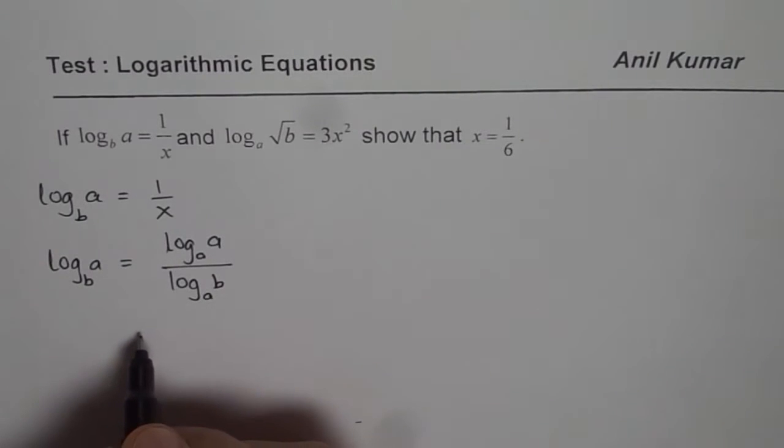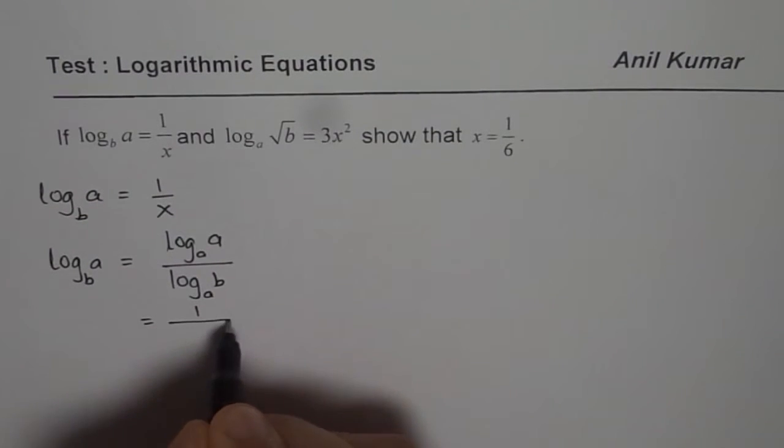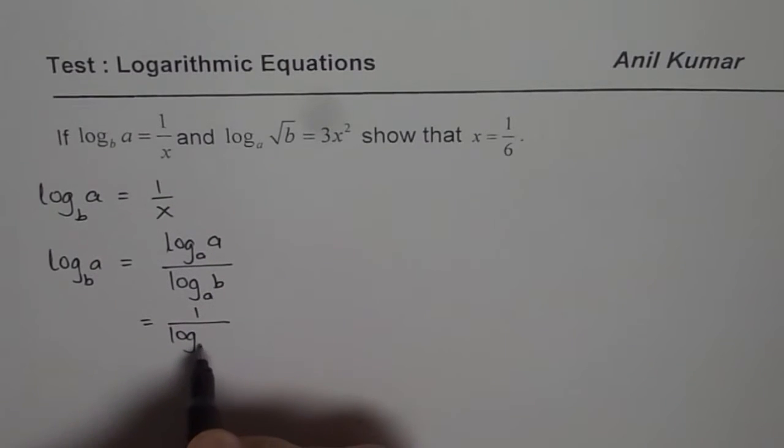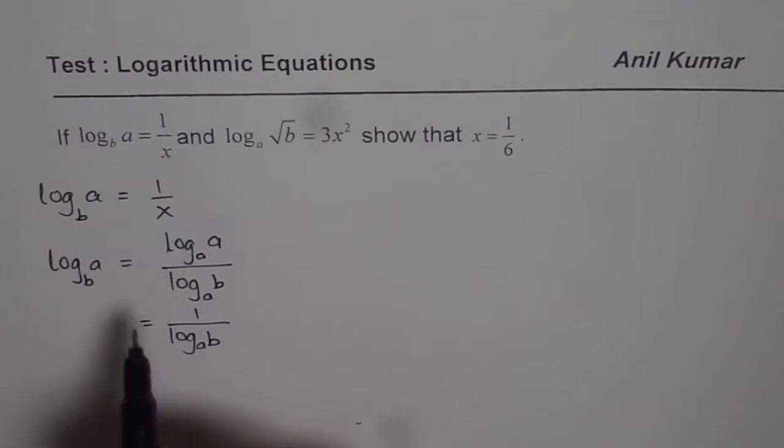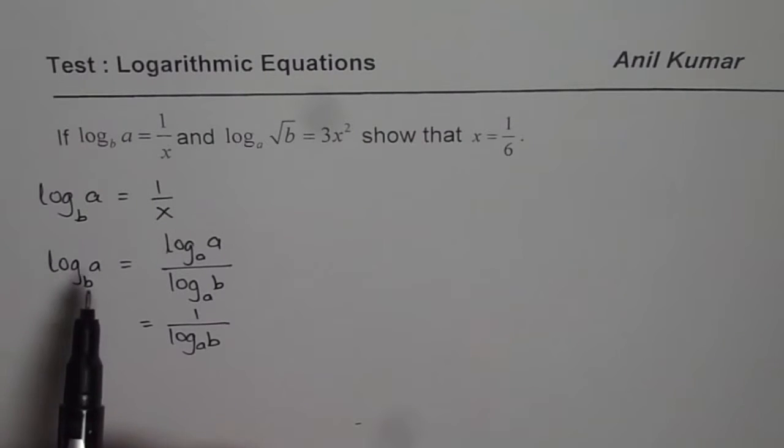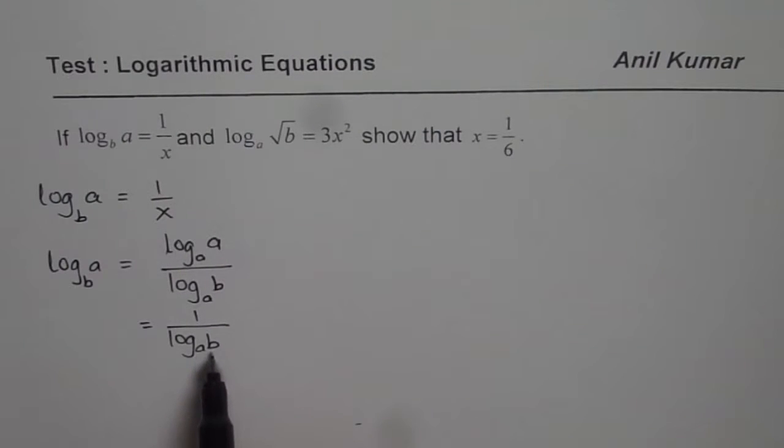Now log a of a is 1. So I could write this as 1 over log a of b. So that is the change of base and I could always write log b of a as 1 over log a of b.